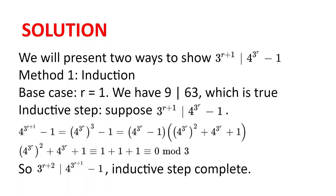We want to show that 3 to the power of r plus 2 divides 4 to the power of 3 to the power of r plus 1 minus 1. We see the factorization of p cubed minus 1 again: 4 to the power of 3 to the power of r plus 1 minus 1 equals 4 to the power of 3 to the power of r, cubed, minus 1 cubed, which equals 4 to the power of 3 to the power of r minus 1, multiplied by 4 to the power of 3 to the power of r squared, plus 4 to the power of 3 to the power of r plus 1. We know the first factor is divisible by 3 to the power of r plus 1, so we just need to show the second bracket is divisible by 3. And indeed it is, since it is congruent to 1 plus 1 plus 1, which is congruent to 0 modulo 3, since 4 is congruent to 1 modulo 3.